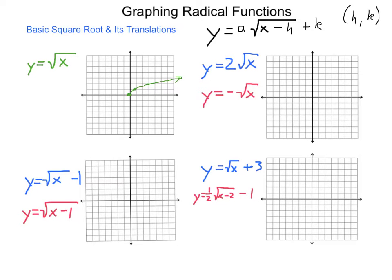What happens if we have y equals 2 times the square root of x? We start at the same point at the origin, but all output values will be doubled. So instead of 1,1 we have 1,2. Instead of 4,2 we have 4,4. Instead of 8,3 we have 8,6. We end up with a graph that has a vertical stretch factor of 2.